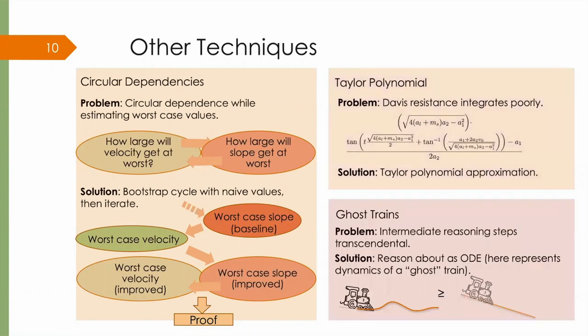Finally, sometimes intermediate steps of reasoning, such as those that turn up in the case of circular dependencies, are themselves transcendental expressions. At these times, we can represent them as extra ghost differential equations running alongside the real system, and compare the original system to them.